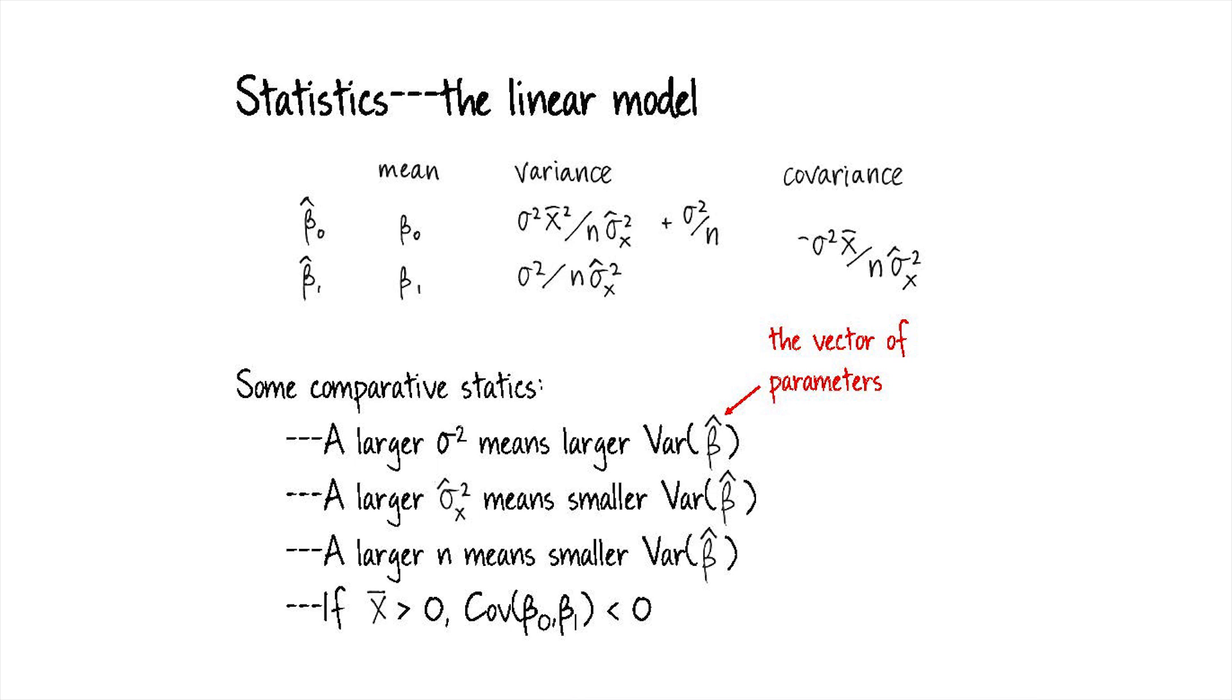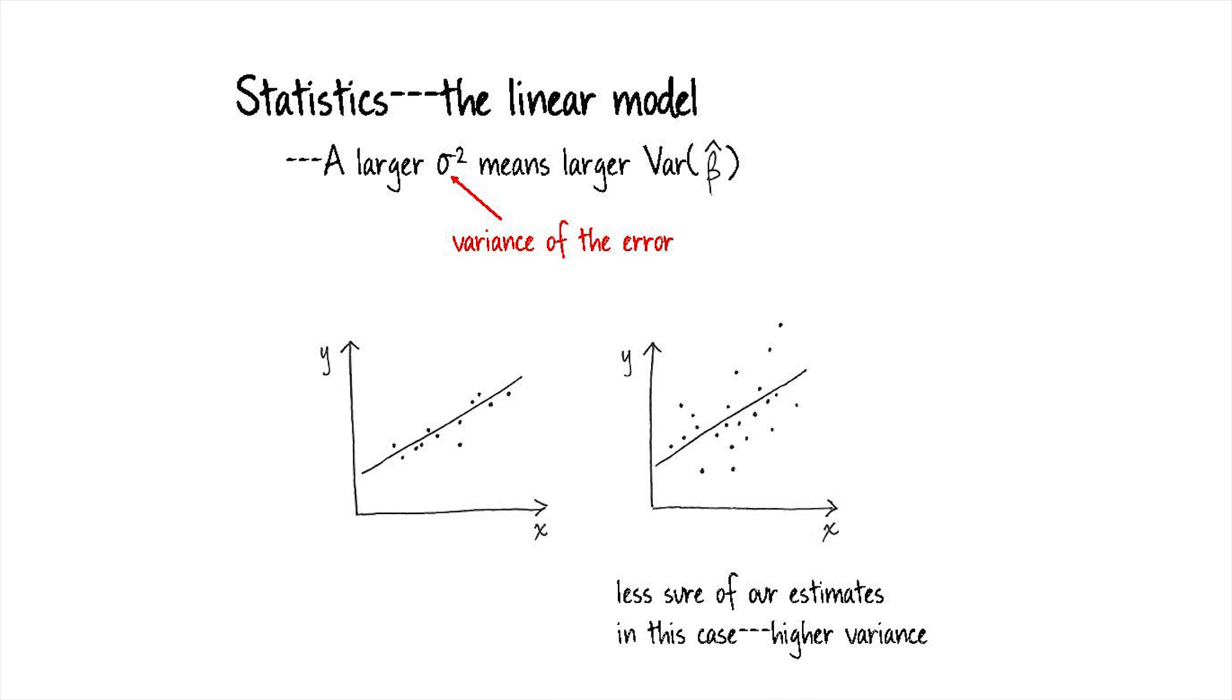And I should say, just a point of notation. I'm often going to start sliding into matrix and vector notation. When I say β̂, I'm talking about the vector β₀ and β₁.